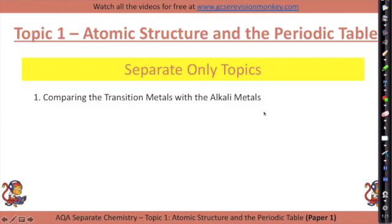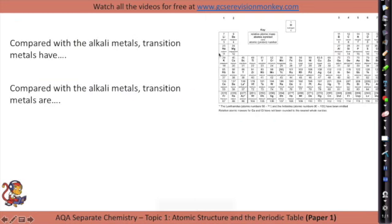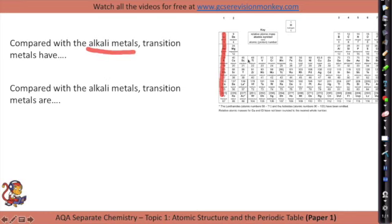For topic 1, there's only one extra piece of content, and that's comparing the transition metals with the alkali metals. Let's start off by remembering where these different metals are. Group 1 is the alkali metals, and the transition metals are the metals in the block between groups 2 and 3.